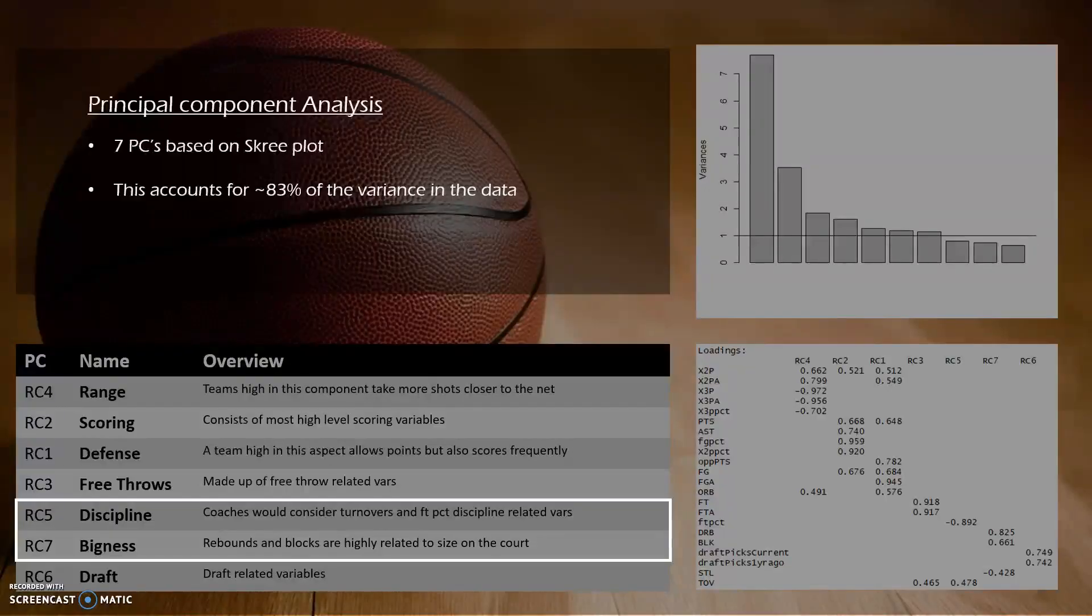So moving forward to the principal component analysis, based on the scree plot to the right, we've identified seven principal components that explain about 83% of the variance in the data. As you look at the loadings, there aren't really too many surprising things. There's a component that's related to shooting, one related to scoring, one related to defense.